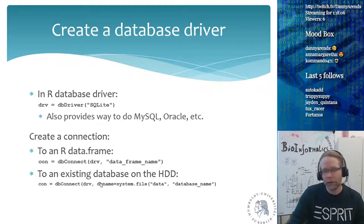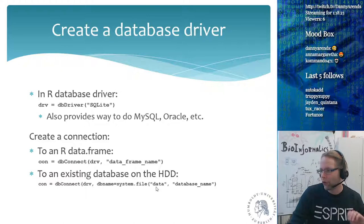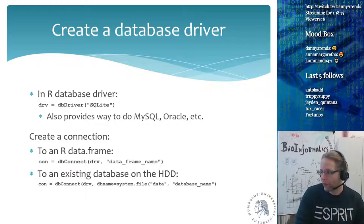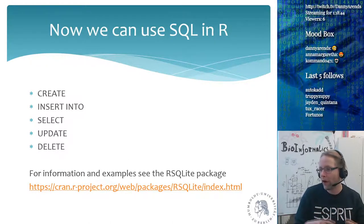If you want to connect to an existing SQLite database on your hard drive, you use dbConnect with the driver, and specify the db name using system.file pointing to your data folder and the database filename. You specify that path and you get a connection, and this connection allows you to directly query through that database file.